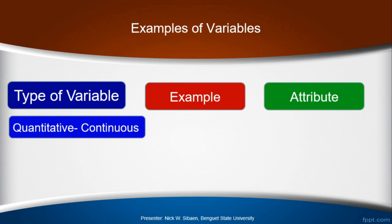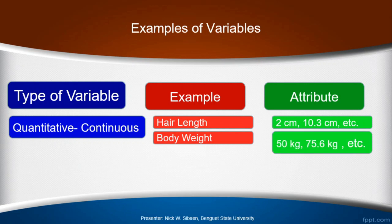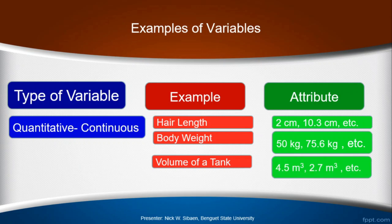An example for quantitative continuous variables: hair length, measured in centimeters — 2 centimeters, 10.3 centimeters. Body weight in kilograms — 50 kilograms, 75.6 kilograms. Or even volume of a tank — 4.5 cubic meters, 2.7 cubic meters, and so on.